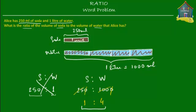So the ratio of soda to water is 1 to 4 — not 250 to 1. When you are given two different units to compare, whether milliliters and liters, grams and kilograms, or kilometers and meters, the first thing you must do is convert both quantities to the same unit. You could also convert 250 milliliters to liters — keeping the one liter as is and changing milliliters to liters. 250 milliliters divided by 1,000 gives 0.250 liters.